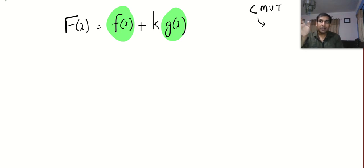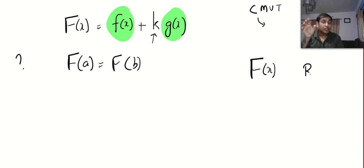And now what I am going to do is just like in Lagrange's theorem I am going to find a value for k in such a way that F of a equal to F of b. So I am creating a function capital F of x which will satisfy all the conditions of Rolle's mean value theorem so that I can apply Rolle's theorem.